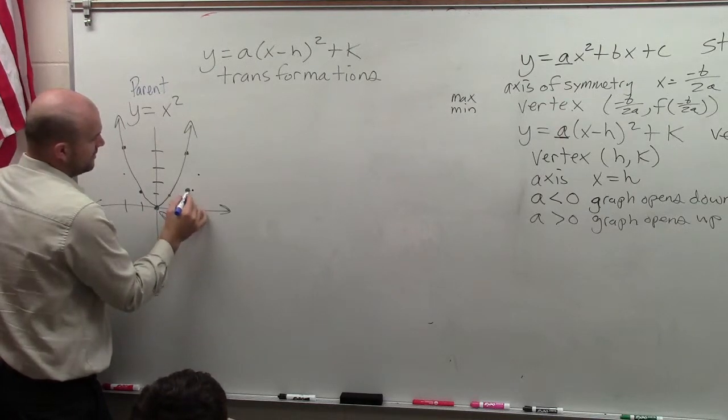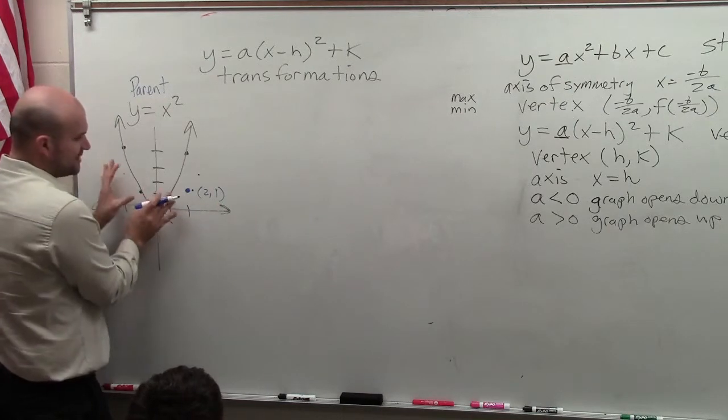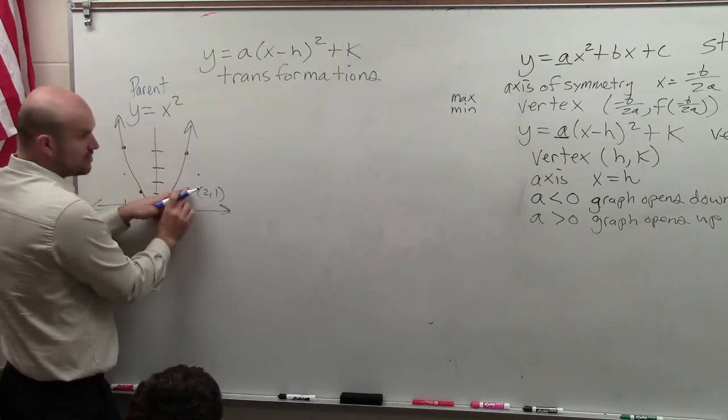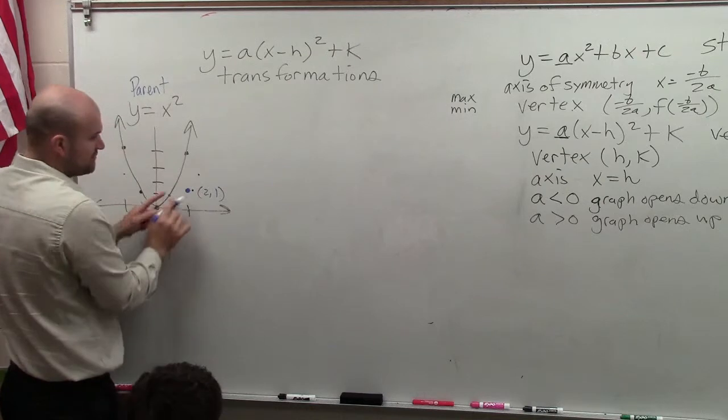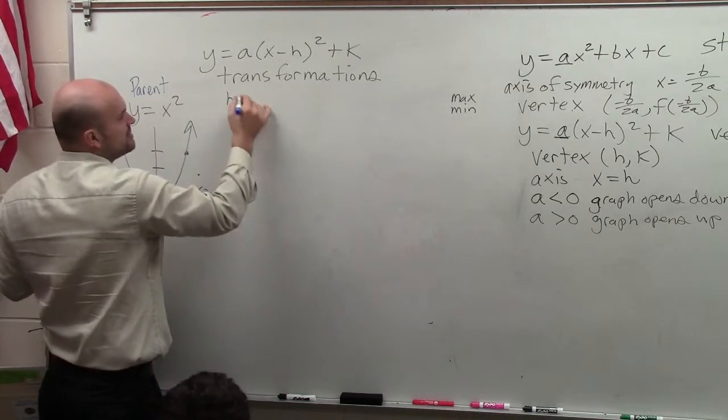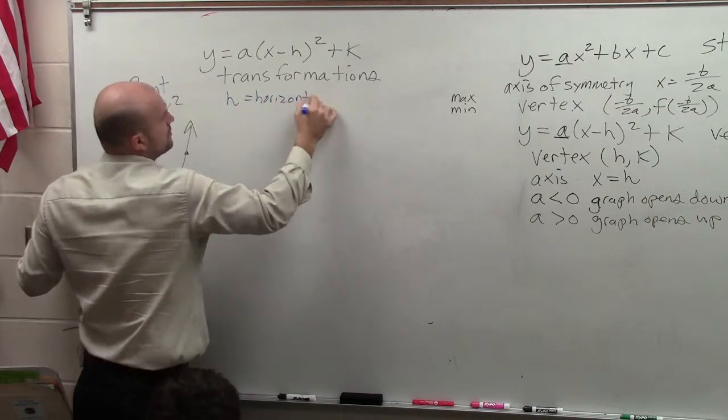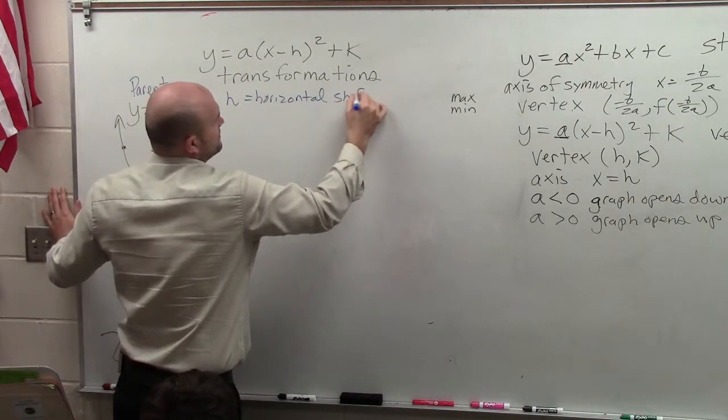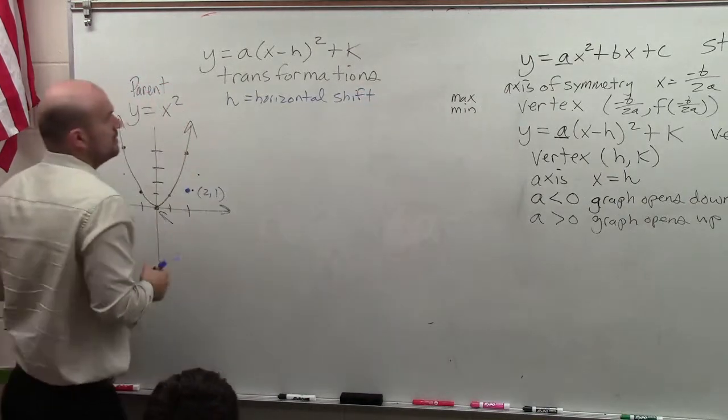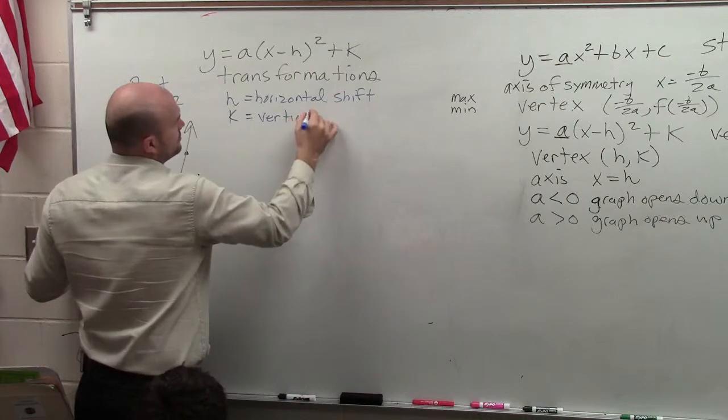Let's say my new vertex is at 2 comma 1. Well, now I've taken this graph and I've shifted the vertex over, so the whole graph is going to shift over to the new vertex. So what that means is the value of h is going to be a horizontal shift. All right, k is going to be your vertical shift.